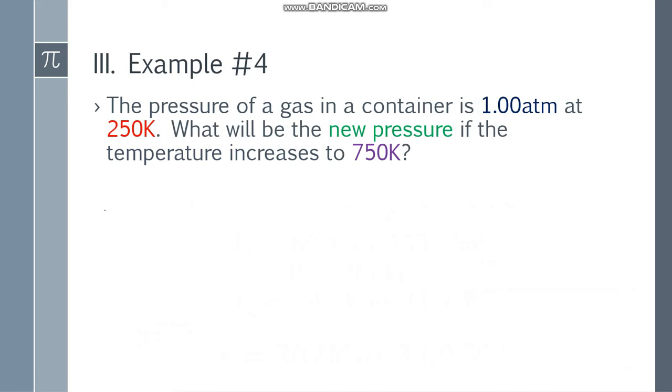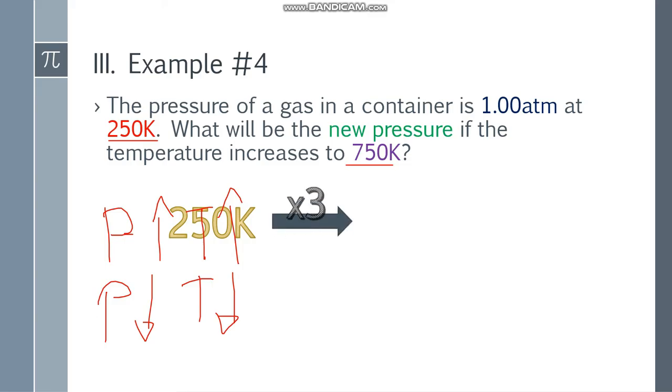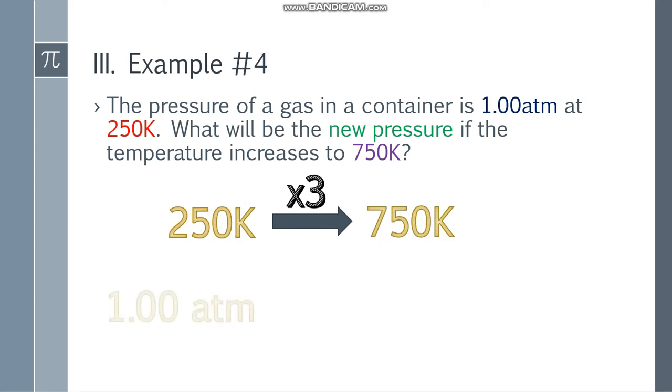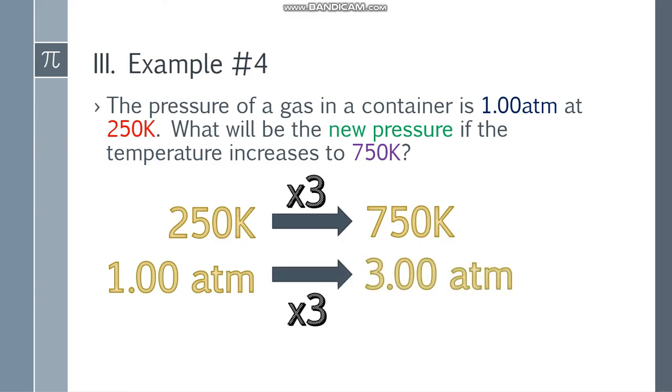How? If the pressure increases, the temperature also will increase. If the pressure decreases, then the temperature will decrease also. They're directly proportional. So you have 250K and 750K. Notice it's times 3, a factor of 3. So your 1 atm will also multiply by a factor of 3, becoming 3 atm.